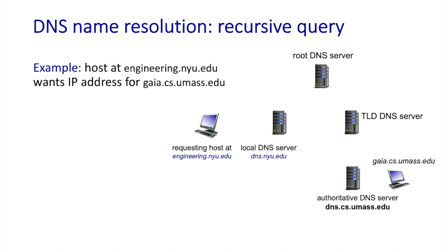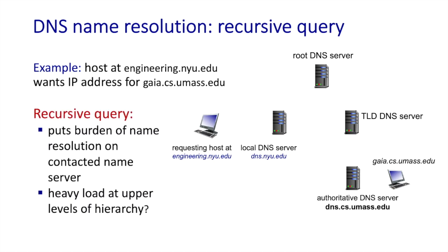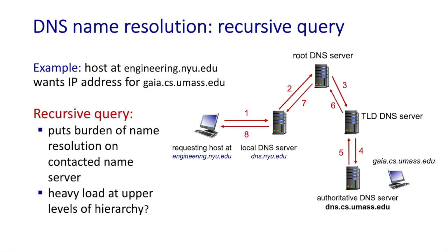A second form is recursive query resolution. Rather than responding with 'I don't know, but here's who to try next,' the name server takes it upon itself to resolve the query and return a definitive reply. In recursive resolution, the local DNS server queries the root server, which queries the TLD server, which queries the UMass authoritative name server, which replies back up the chain to the TLD, to the root, to the local DNS server, to the querying host. Because this puts the burden on upper-level servers, it's not often used in practice — iterative querying is preferred.